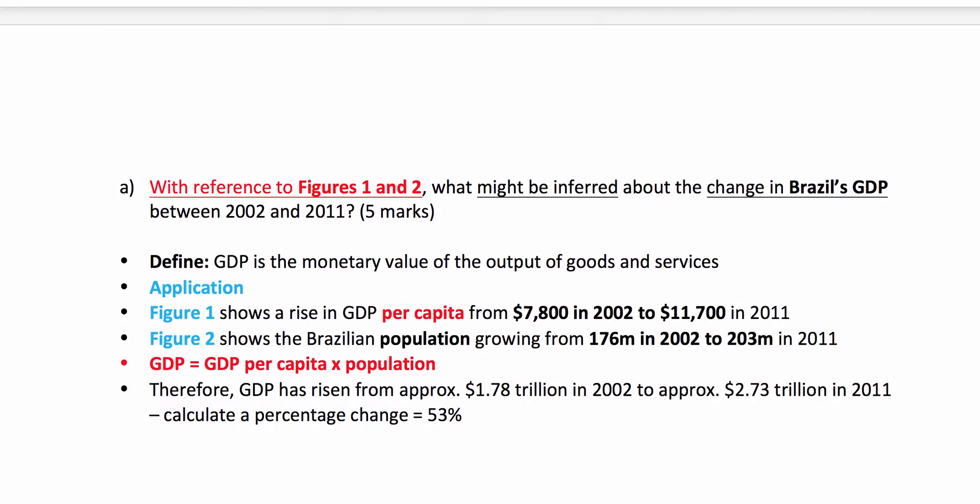Question A: with reference to figures 1 and 2, what might be inferred about the change in GDP for Brazil between 2002 and 2011? Five marks. It's always worth defining the key term in the question. GDP is, of course, the monetary value of the output of goods and services produced within Brazil. When you get a question that says 'with reference to figures 1 and 2', you must put the data in your answer — this is data response, not data ignore or data leave out.